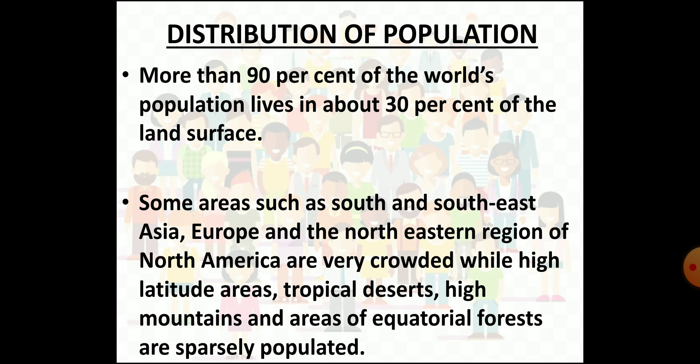For example, places like South and Southeast Asia, Europe and North-eastern North America have high population. However, population is low in regions where the climate is inhospitable — like high altitude regions, extremely cold regions, tropical deserts, and the dense forests of equatorial regions.